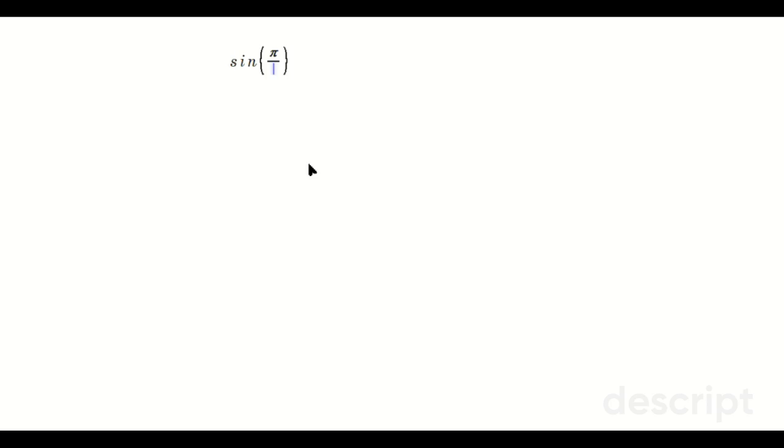Find sine of pi over 8. So first write this as sine of pi over 4 times 2, and then rewrite that as sine of pi over 4 on top over 2.